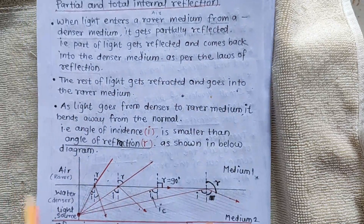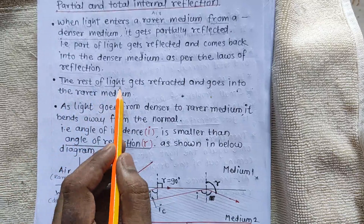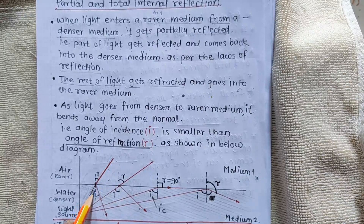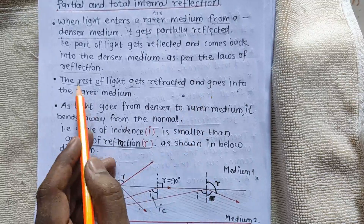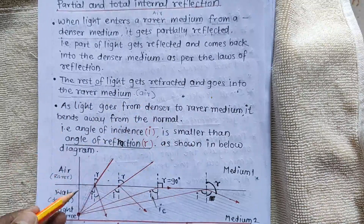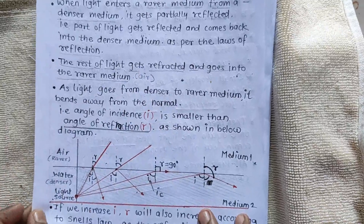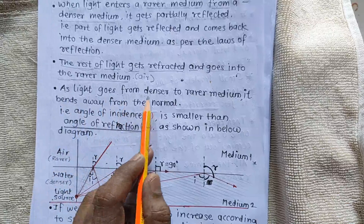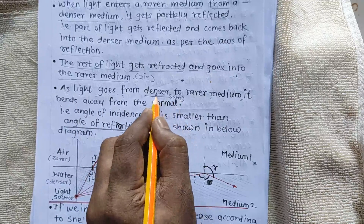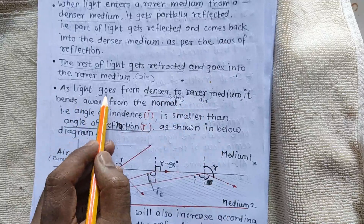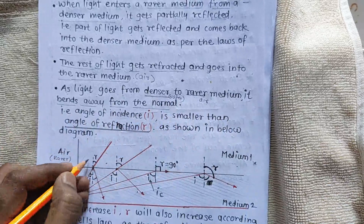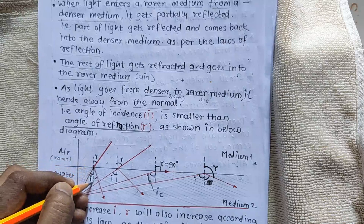The other 50 rays that got reflected — the rest of the light gets refracted and goes into the rarer medium, that is air. As the light goes from denser medium water to rarer medium air, it bends away from the normal.